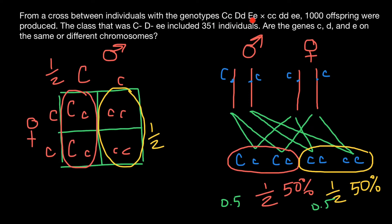We have now done the cross for just one locus — gene C — represented by dominant and recessive alleles. We need to do the same for each pair of loci. We have genes C, D, and E. For gene D, crossing dominant and recessive allele D with homozygous recessive gives the same picture as for gene C. The same is true for gene E. If these genes are on different chromosomes, we expect certain proportions of individuals of each genotype and phenotype.